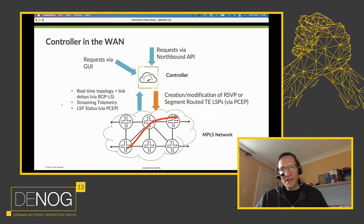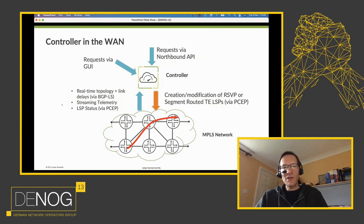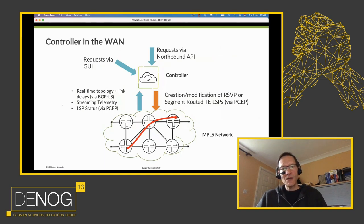It uses BGP-LS to see the current topology of the network — the layout of links and nodes, and the bandwidth of each link, whether it's a 10 Gig or 100 Gig link. It also receives a lot of live traffic information via streaming telemetry. What is being streamed from the routers is how much traffic is traveling on each physical link, and how much traffic is entering each traffic-engineered LSP on the network.